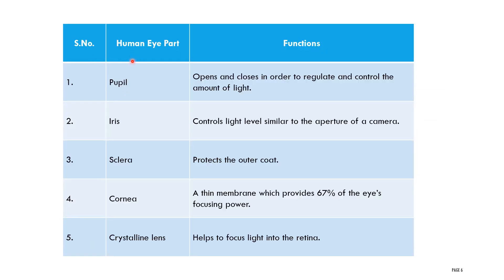Let us summarize the human eye parts and their respective functions. The pupil opens and closes to regulate and control the amount of light entering the eye. The iris controls light level similar to the aperture of a camera. The sclera protects the outer coat of the eye. The cornea is a thin membrane which provides 67% of the eye's focusing power — the focusing of the object occurs at the cornea.